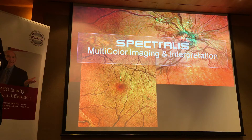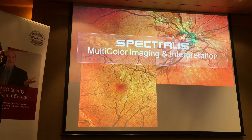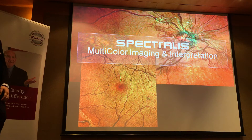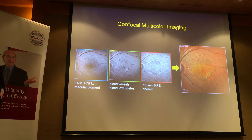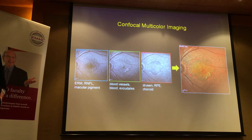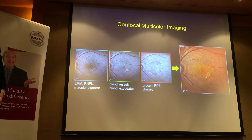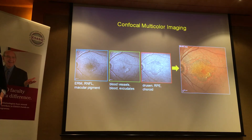I'd like to talk about multicolour imaging, which is relatively not used commonly, and you need to have a specific device for it. What it does is use confocal imaging with three different wavelengths — blue, green, and infrared — producing three simultaneous images as well as a composite. This is not a true colour image — it looks a bit different from a typical colour fundus photo — it's what we refer to as a pseudo-colour image.